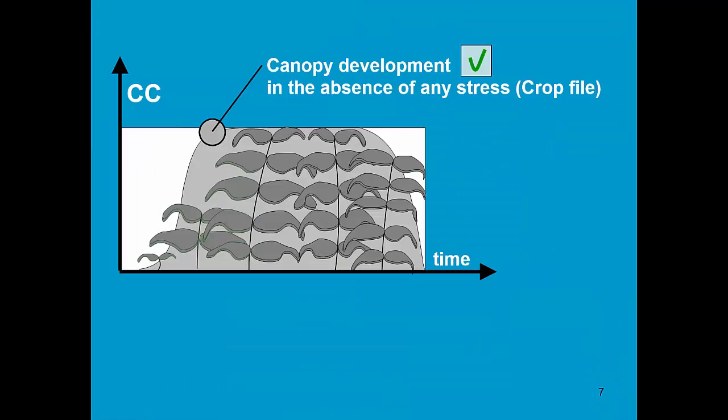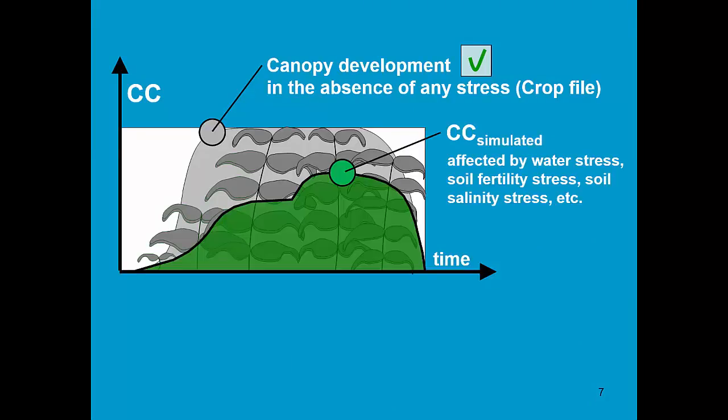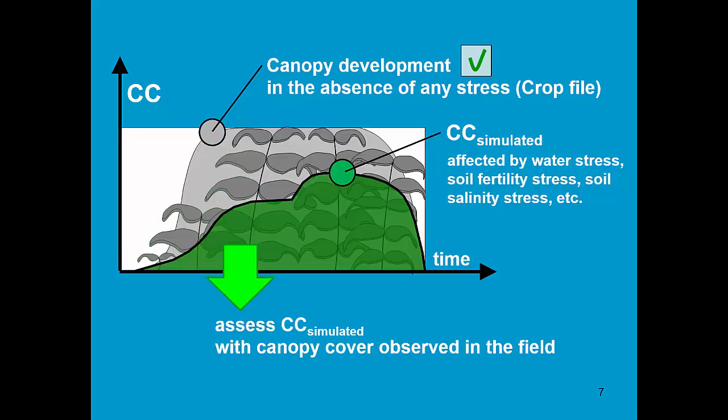In the crop file we find the canopy development in the absence of any stress. However, when we run the simulation, the simulated canopy cover might be far different from the canopy development in the crop file. This is the result of water stresses, soil fertility stresses, soil salinity stresses, and so on. In AquaCrop we can assess the simulated canopy cover with canopy cover observed in the field.